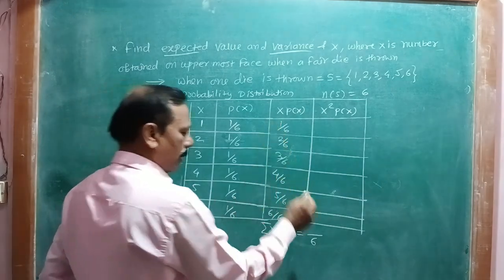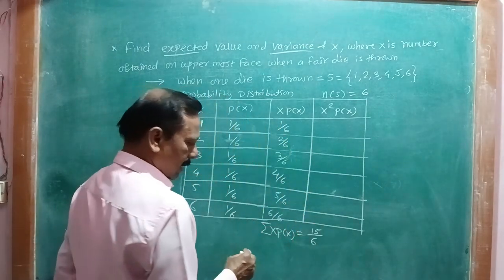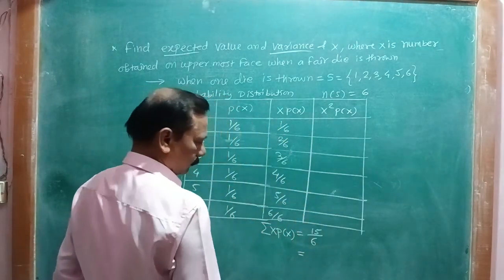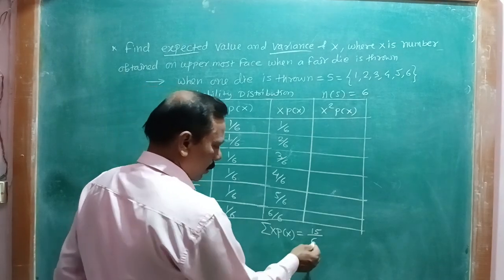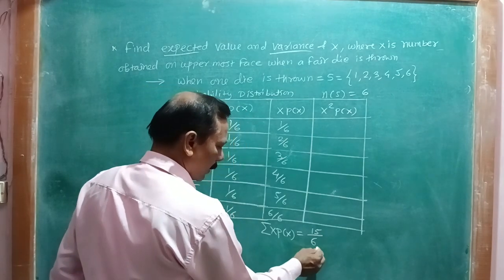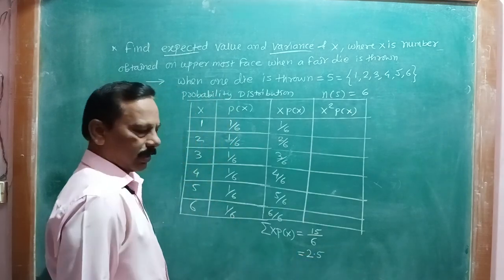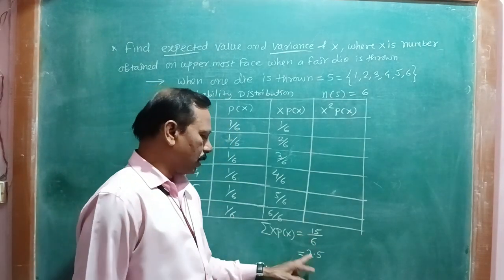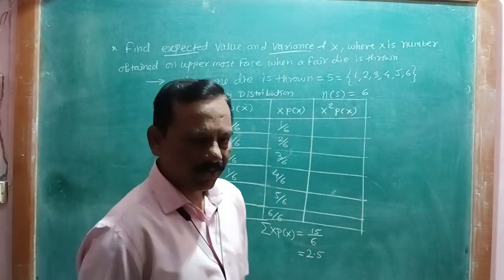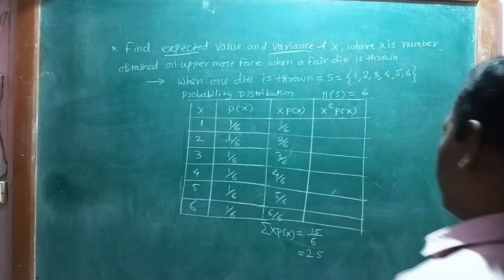Summing the numerators: 6 + 5 + 4 + 3 + 2 + 1 = 21... computing step by step: 5+4=9, 9+3=12, 12+2=14, 14+1=15. So E(X) = 15/6, but actually summing all: 1+2+3+4+5+6=21... the sum gives 15/6 divided equals 2.5. Therefore E(X) = 2.5.